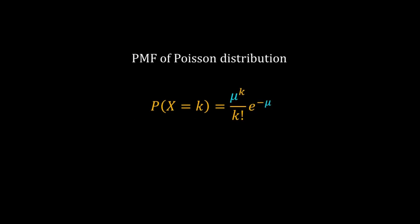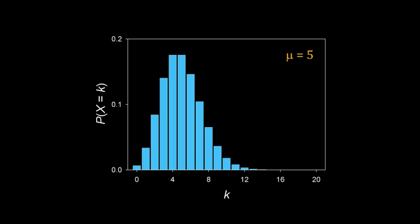The function μ to the power k divided by factorial k times e to the power minus μ is the PMF of Poisson distribution. Poisson distribution is a distribution of discrete random numbers. Here is the PMF of Poisson distribution with μ = 5.